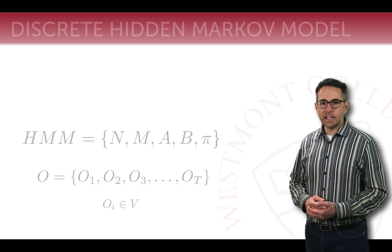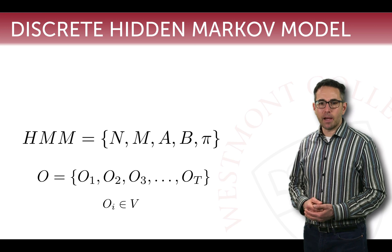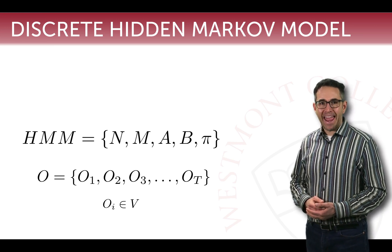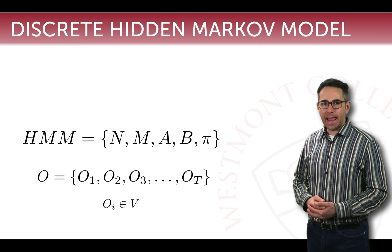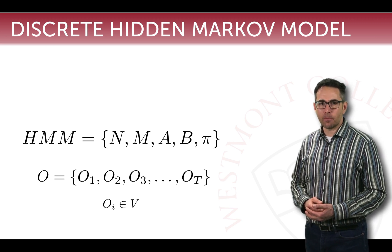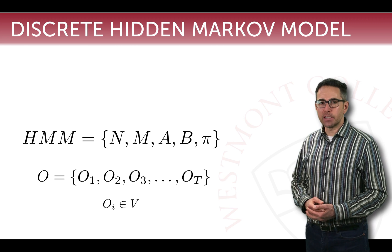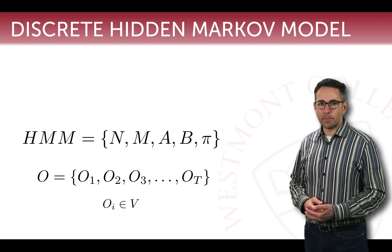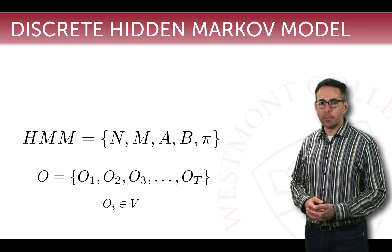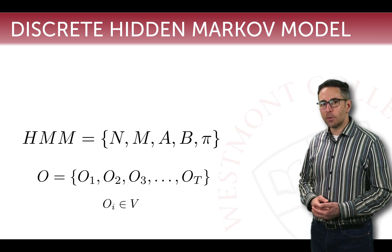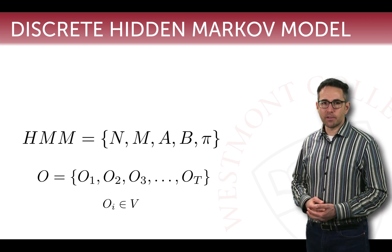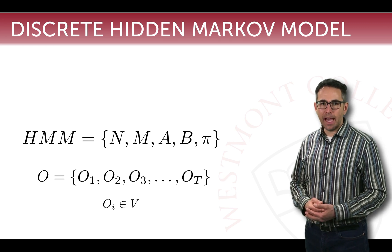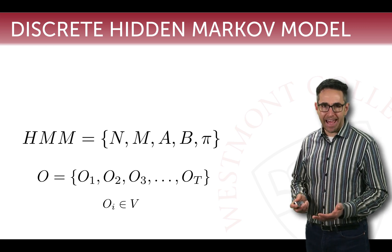Together, that gives us the complete definition of a hidden Markov model, defined by five parameters: N the number of states, M the number of observable symbols, A the state transition matrix (probability of moving from one state to another), B the observation probabilities (probability of a particular state generating a particular symbol), and π the probability of starting in a particular state. These parameters can be used to generate a sequence of observations O₁, O₂, O₃, up to Oₜ, where each observation Oᵢ is drawn from the vocabulary of M observations.